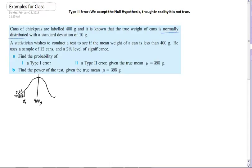So first it says find the probability of a type 1 error. Well, the probability of a type 1 error is, of course, that's alpha equals 0.02, or 2%, which is the level of significance, right?